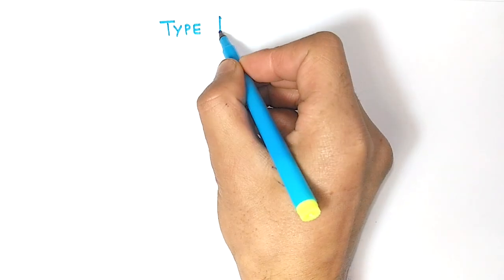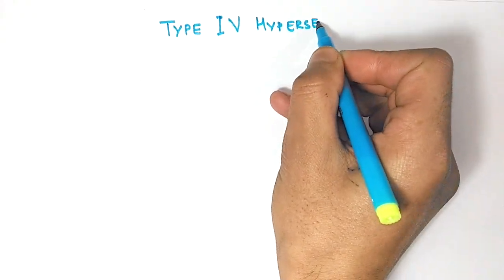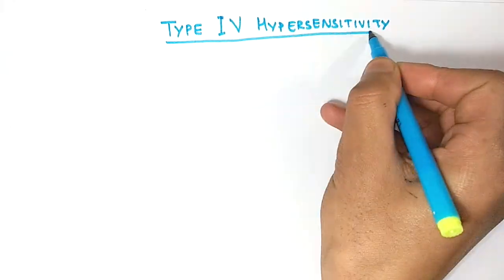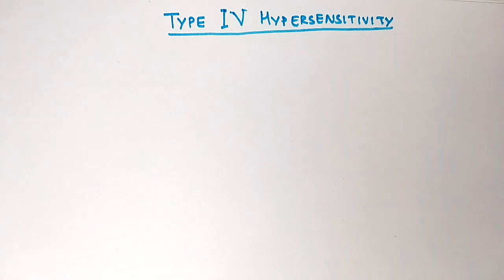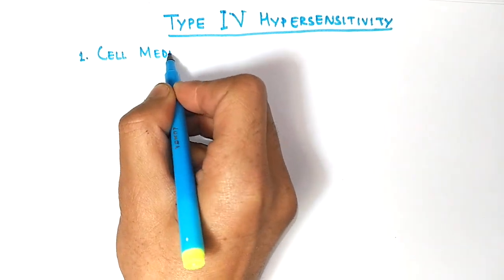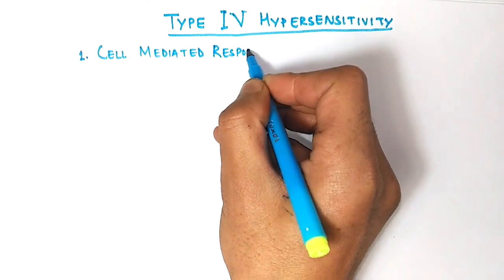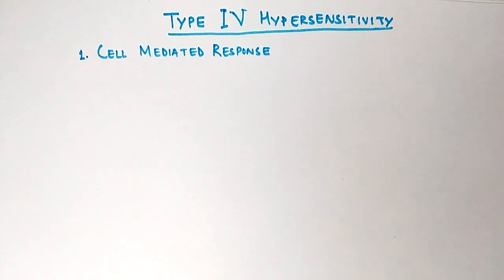Hi friends, this is the last reaction of our immune system which we call Type 4 hypersensitivity. The first most important thing is that it is a cell-mediated response, wholly and solely cell-mediated, not by antibodies like in other hypersensitivity reactions. So there are no antibodies involved in this hypersensitivity reaction.